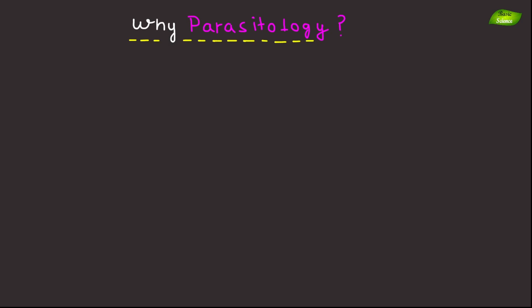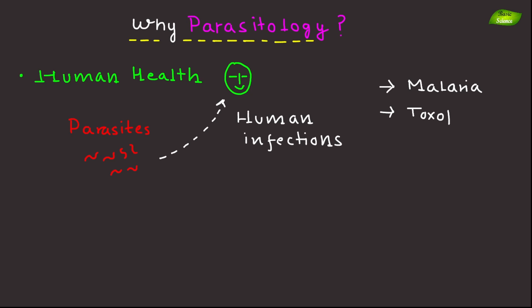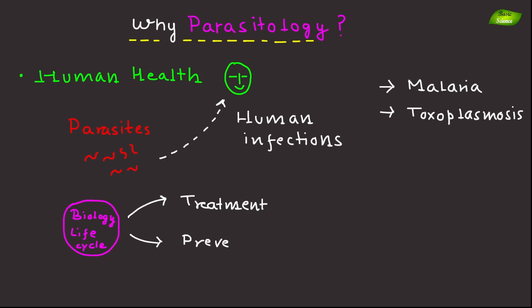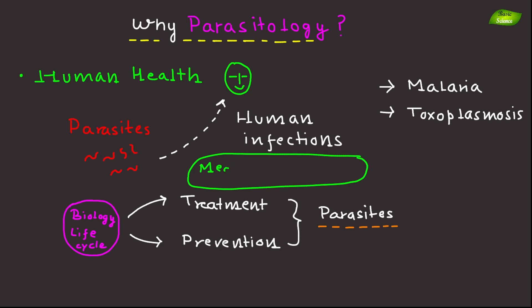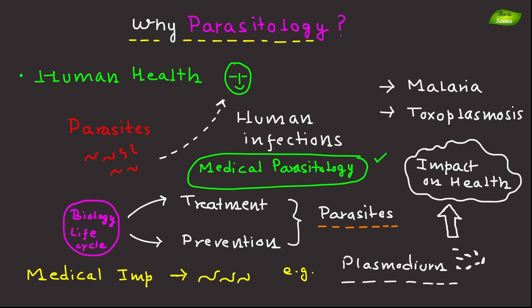Why is parasitology important? The first reason is human health. Many parasites cause significant diseases in humans, such as malaria and toxoplasmosis. Understanding the biology and lifecycle of these parasites can lead to better prevention and treatment strategies. This area is called medical parasitology, and the plasmodium parasite — which causes malaria — is a primary focus due to its significant impact on human health.